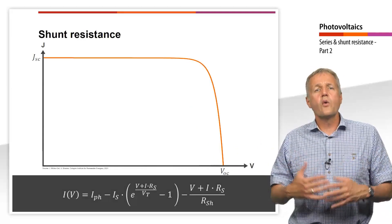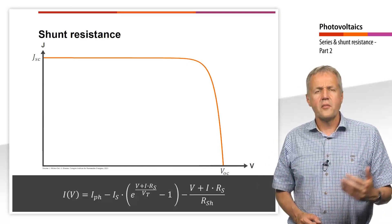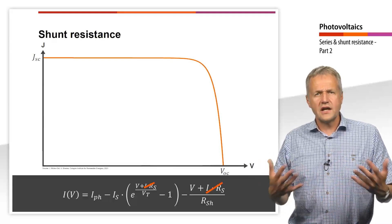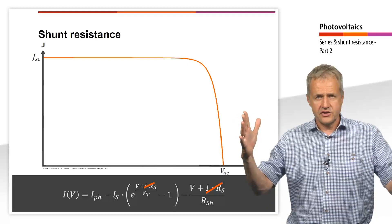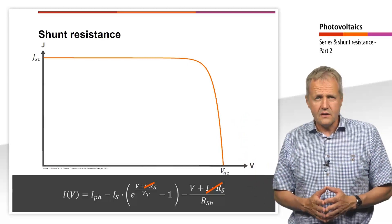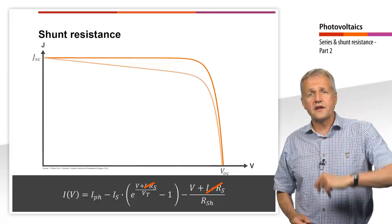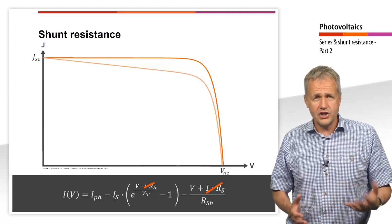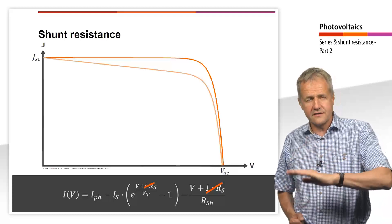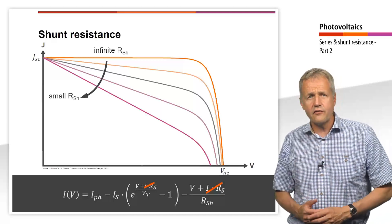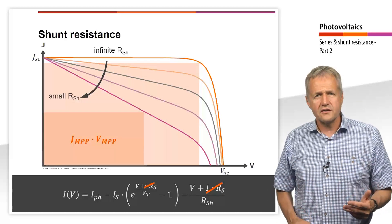Let us now consider a solar cell without a series resistance. The current through the diode in this case is that of an ideal solar cell, and the term I multiplied by RS in the equation is deleted. The shunt resistance only appears in the last term of the equation. We start with a solar cell with a large shunt resistance; in this case, the last term can be neglected and almost no current flows through the shunt resistor. If we reduce the shunt resistance, the JV curve decreases over the entire voltage range because of the linear influence of the shunt. While the short-circuit current density remains unchanged, the slope of the JV curve near the short-circuit current density decreases. The smaller the shunt resistance becomes, the flatter the JV curve will be at this point. Again, the point of maximum power shifts and the fill factor decreases as the shunt resistance decreases.